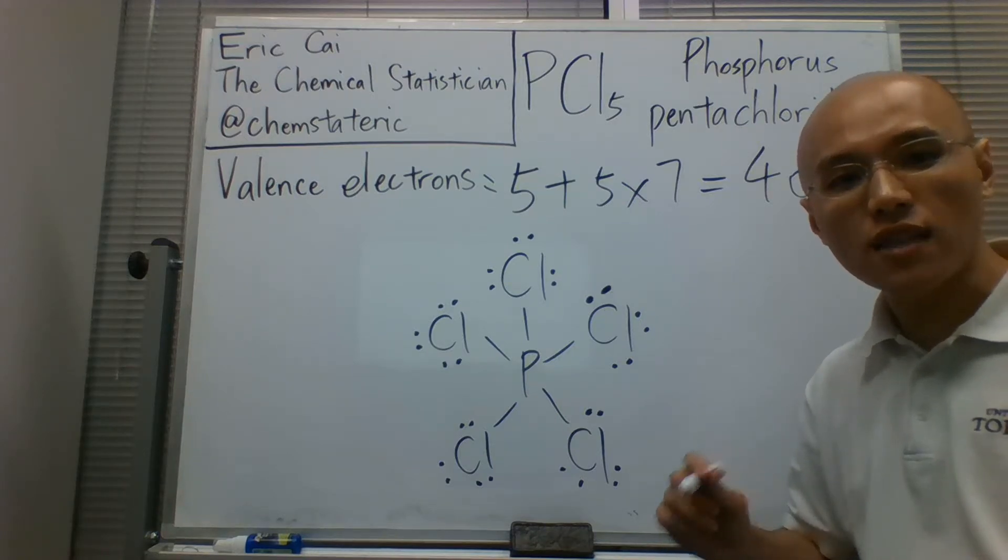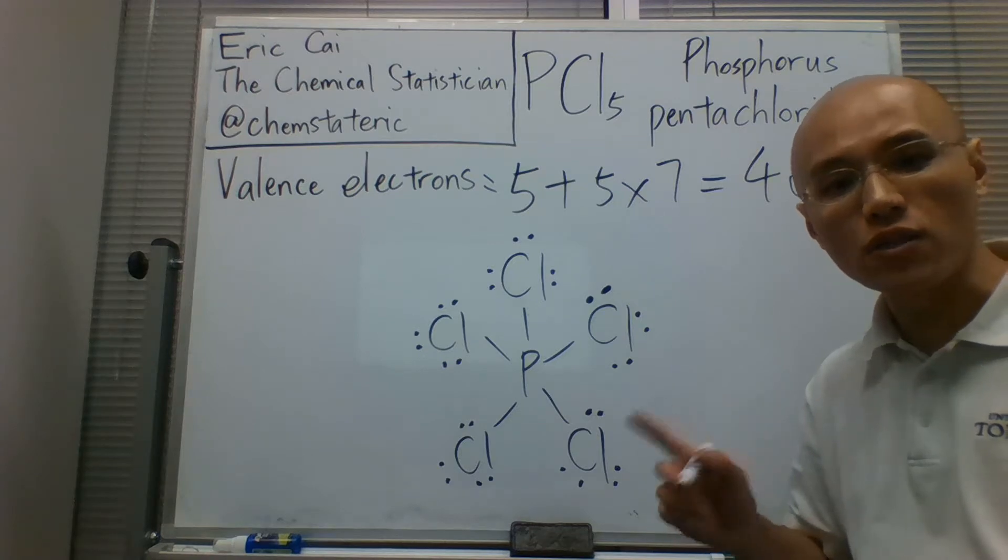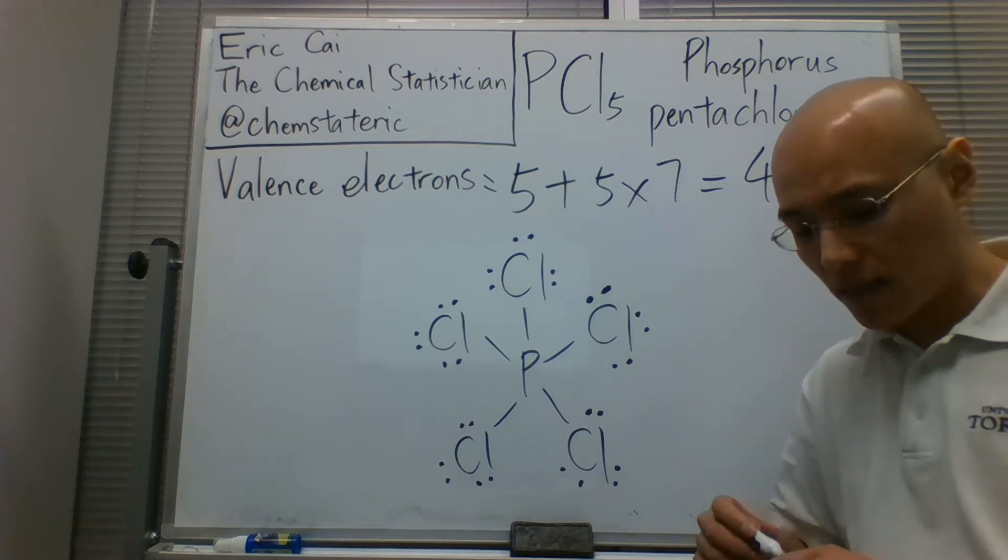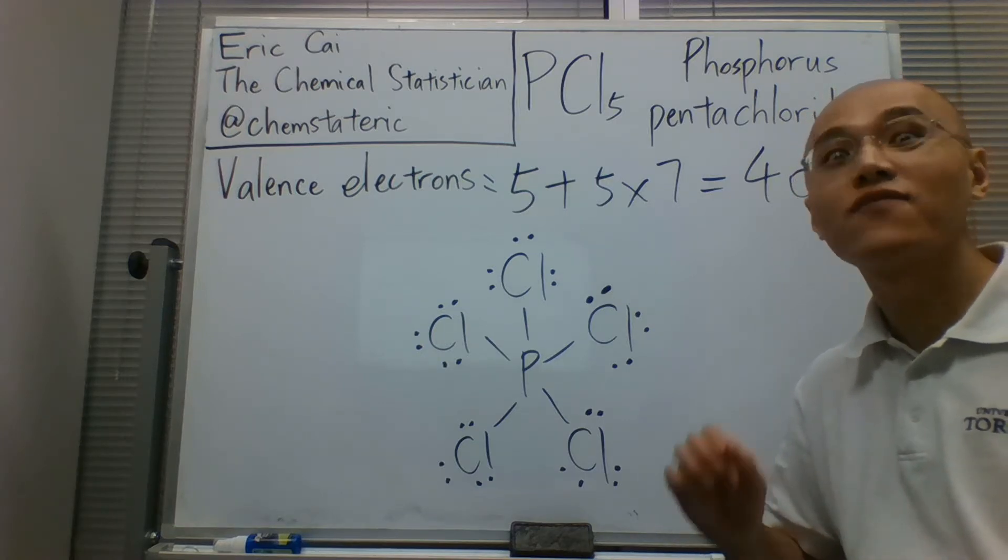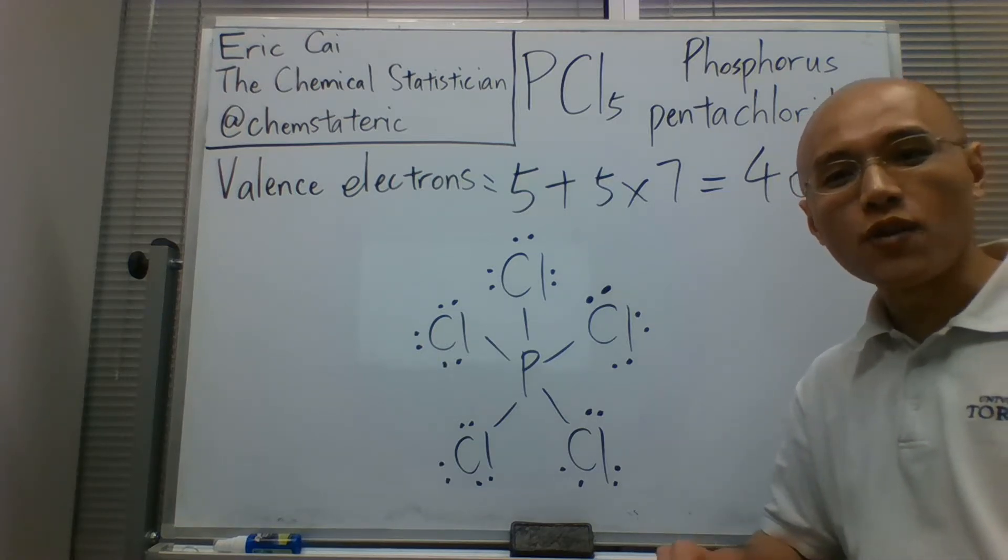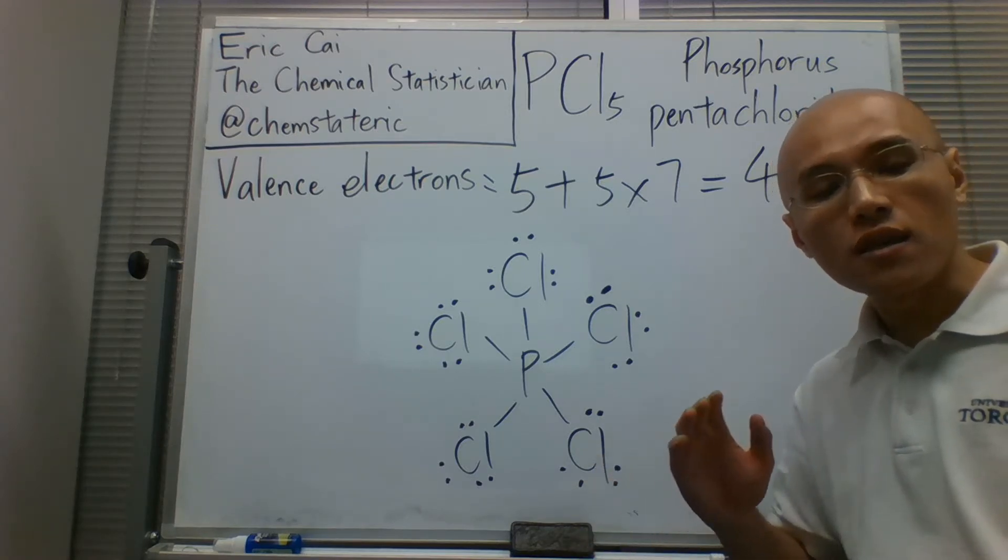Recall that the octet rule works for atoms with atomic numbers 1 to 20. Beyond that, those atoms have d orbitals, so the octet rule is violated for those elements.